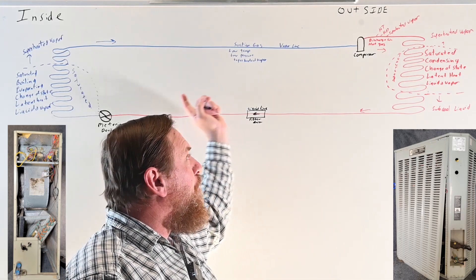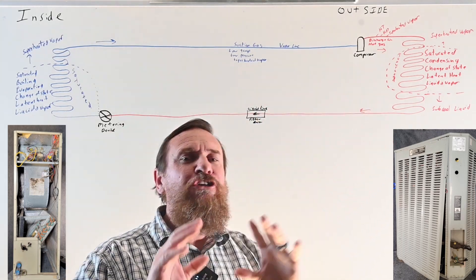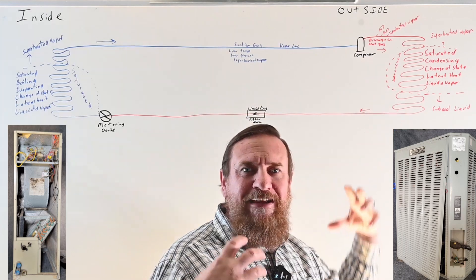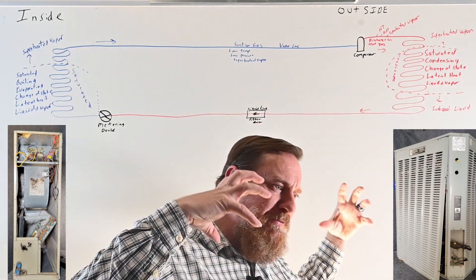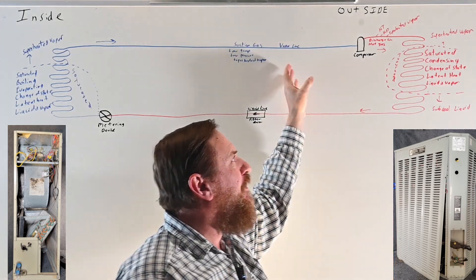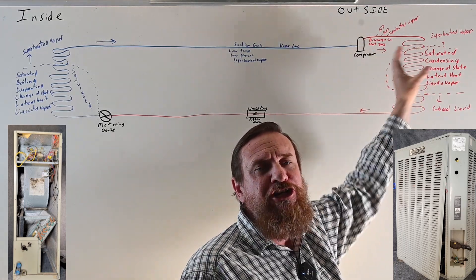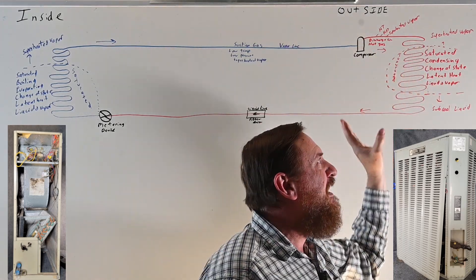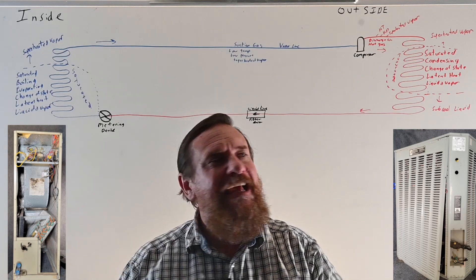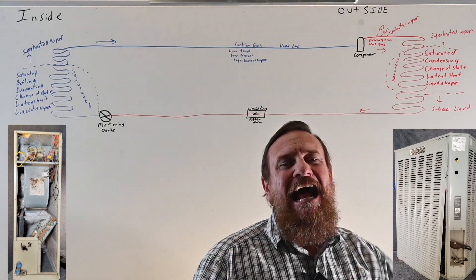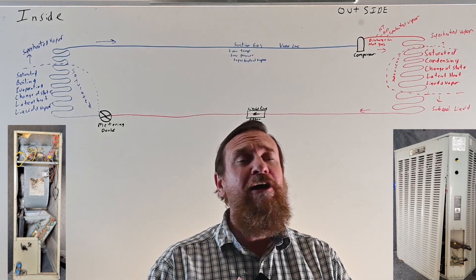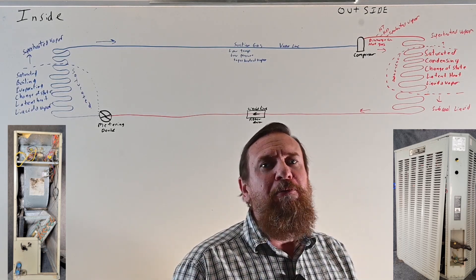Coming back to the compressor, it's a low temperature, low pressure, superheated vapor, and the compressor raises that pressure. It takes all those molecules, combines them together, squeezes them so we raise the pressure and temperature higher than the temperature outside — absorbing heat from inside the house and rejecting heat outside the house. That's our basic refrigeration cycle.